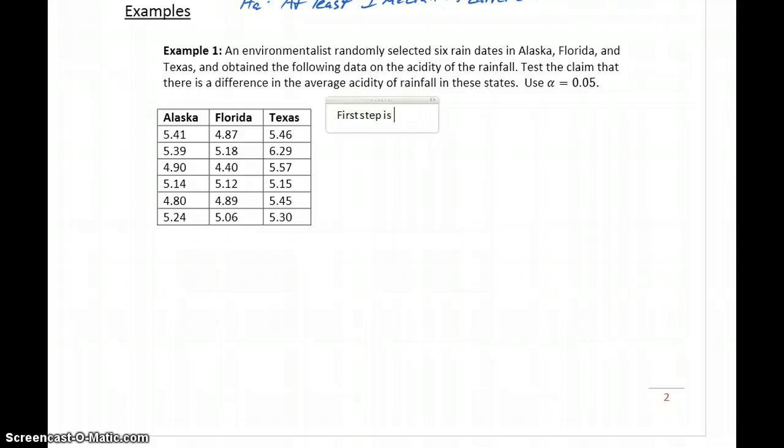The first step is to assess normality. We've worked through multiple examples of that, so I'll leave that for you to verify, but for Alaska you should get a p-value of 0.4446.